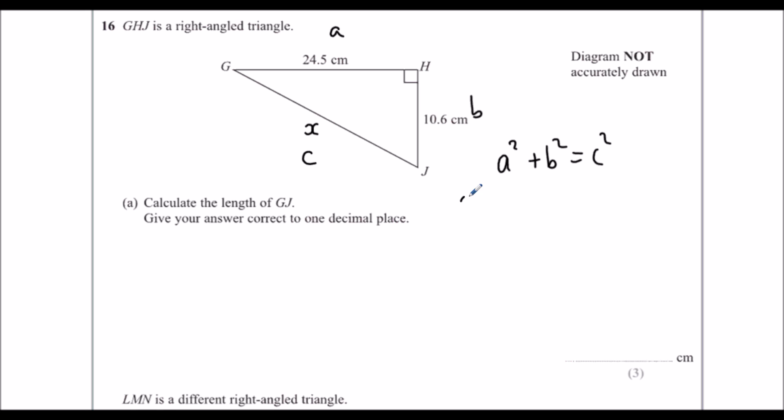So we've got 24.5 squared plus 10.6 squared equals our x squared. So we can work this out in the calculator, and we're going to get a number, and then we're going to square root that number, and that's going to give us x. So we should get x squared, so this bit in the calculator, this side in the calculator, should give us 712.61. And then we square root that answer, and that should give us x, which to one decimal place is 26.7.